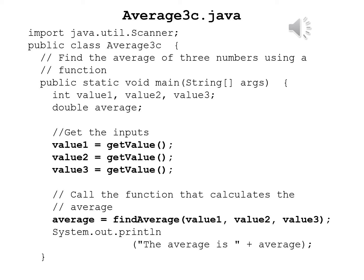I now have the comment call the function that calculates the average. Average equals findAverage of value1, value2, value3. And lastly, the output statement: System.out.println open parenthesis quote the average is unquote plus average, close parentheses semicolon, and a close brace for the method.